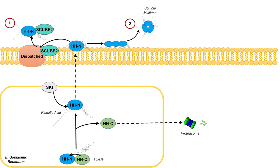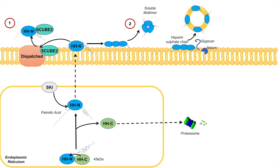The third way is similar to the second in that the hedgehog proteins can accumulate within the plasma membrane. This time they interact with a protein known as Notum and with the heparin sulfate chains on glypican. The heparin sulfate chains enable the hedgehog proteins to recruit lipoforin apolipoproteins, and in this way they can get incorporated into a lipoprotein themselves to be released. This is the third way hedgehog proteins can be released from a cell.